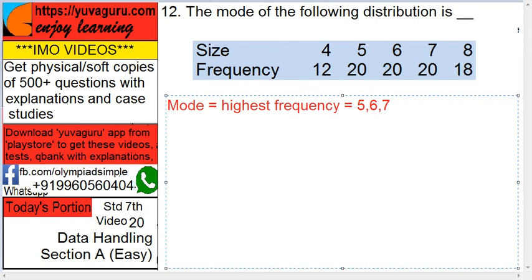It is not compulsory that there can be only one mode in any distribution. All of them can be the mode. For example, if the frequency was 20 for all, then all would have been the modes.